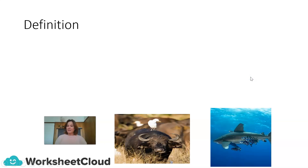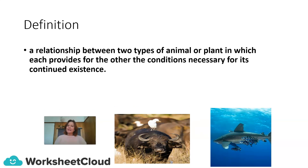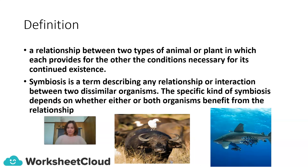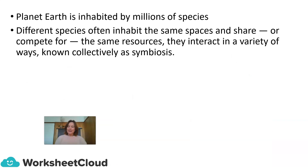Let's start off with the definition of symbiosis. It is basically a relationship between two types of animals or plants, in which each provides for the other the conditions necessary for its continued existence. It is a term describing any relationship or interaction between two dissimilar organisms. The specific kind of symbiosis depends on whether either or both of the organisms benefit from the relationship.